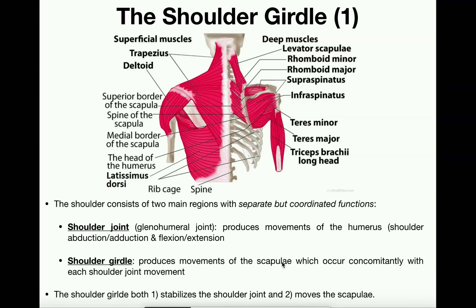If you move your left arm, you're going to have movements of the left scapula, and the same thing occurs on the right side. These movements of the scapula have to occur concomitantly with each shoulder joint movement — they have to occur together. The shoulder girdle is going to perform two major functions: one, stabilize the shoulder joint, and two, move the scapula. With each movement of the humerus at the shoulder joint, you must have a corresponding movement of the scapula.